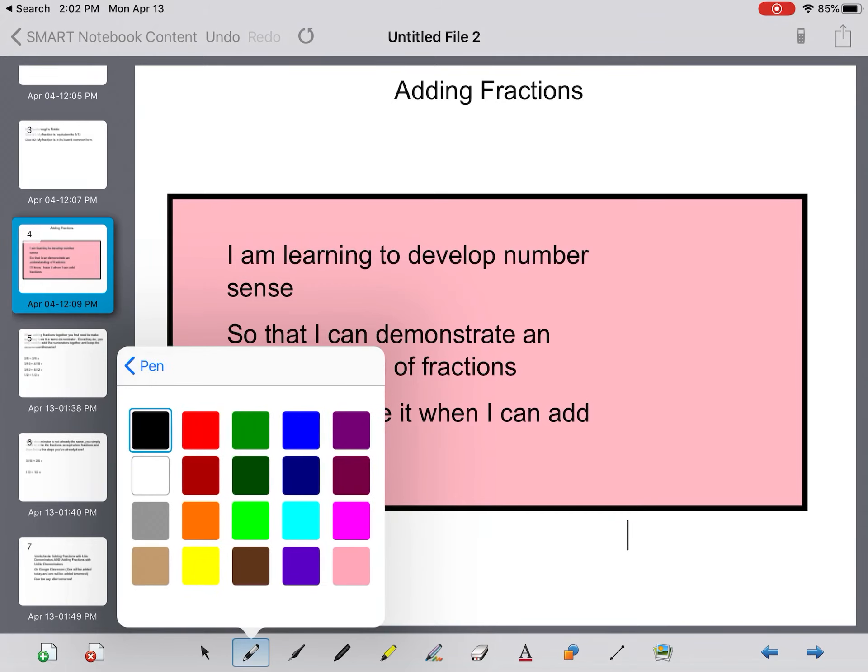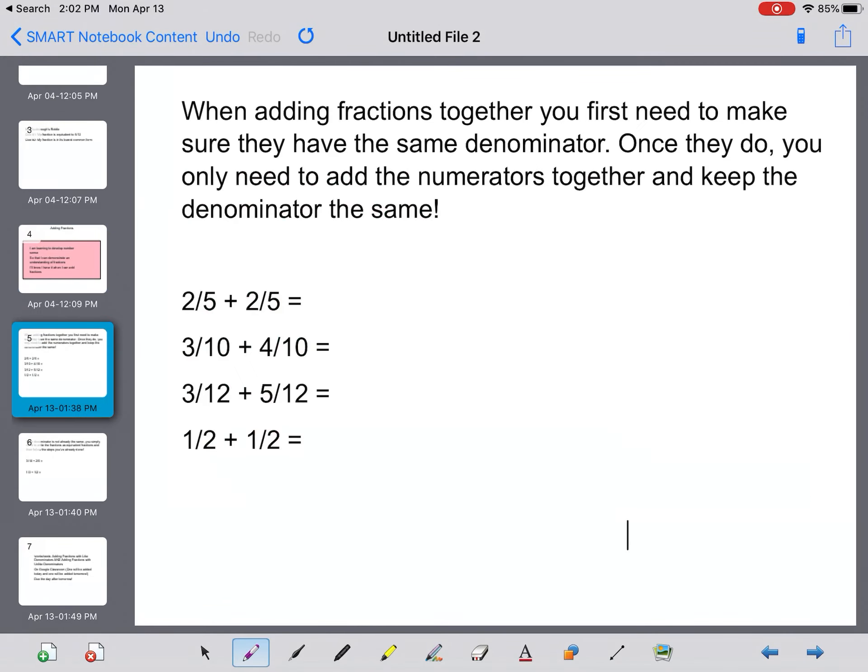All right, so just make sure I've got my purple pen. When adding fractions together, the first thing you need to do is make sure that they have the same denominator, the same number on the bottom. Once they do, you only need to add the numerators or the top numbers together and keep the denominator the same.